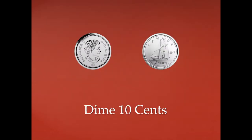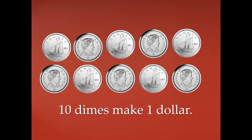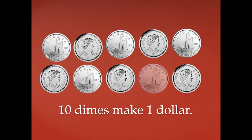This is a dime. A dime is worth ten cents. On the head side of the dime we have a picture of Queen Elizabeth the Second, and on the tail side we have a ship — and that ship is called the Bluenose. On the top it says 'Canada' and on the bottom it says 'ten cents.' It takes ten dimes to make one dollar. Let's count the dimes by ten: ten, twenty, thirty, forty, fifty, sixty, seventy, eighty, ninety...